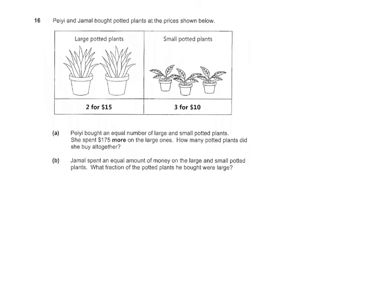Now let's look at part B. Jemau spent an equal amount of money on the large and small potted plants. What fraction of the potted plants he bought were large? The large potted plants were sold at $15, and small potted plants are sold at $10. We need to find the lowest common multiple of $15 and $10, and we know that it is $30.